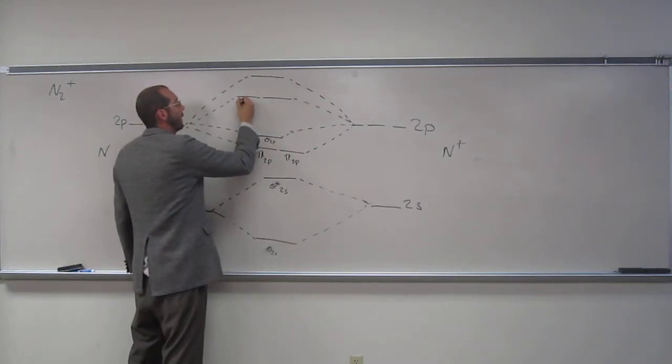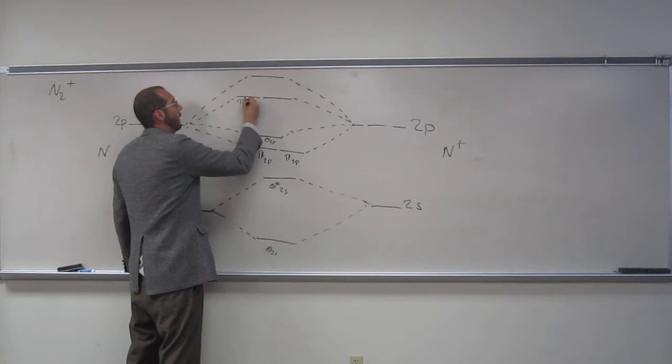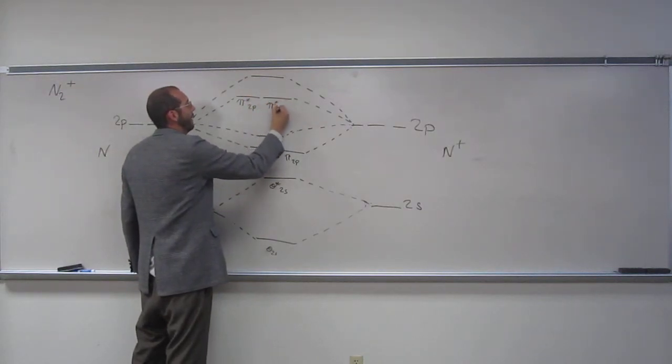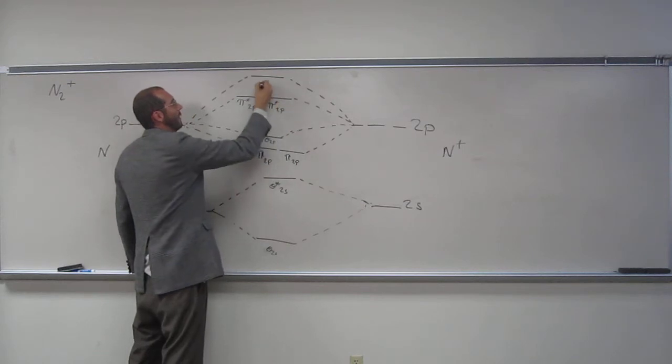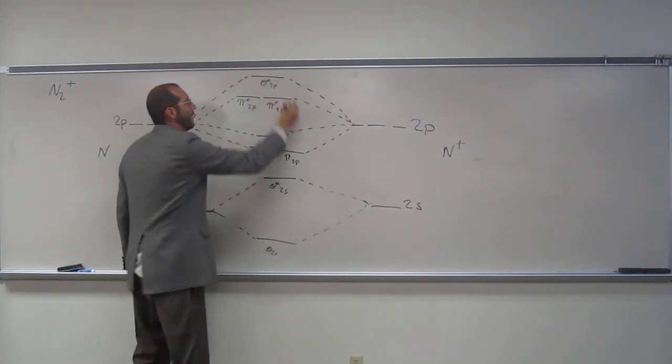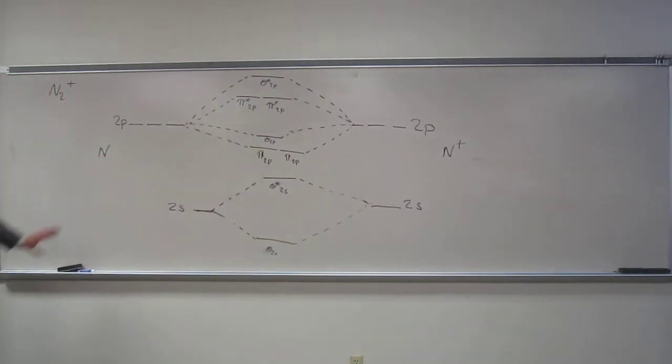So we call these ones pi 2p, pi 2p, sigma 2p like that. This one's called, what do you think? Very good, pi star 2p, pi star 2p, and this one? Sigma star 2p. Very good. Is everybody okay with that?